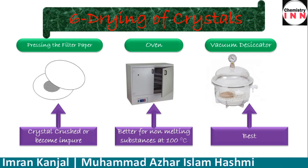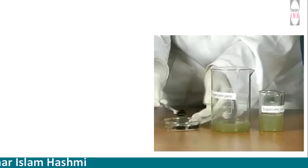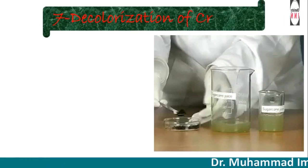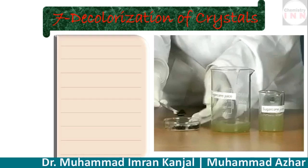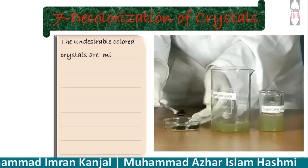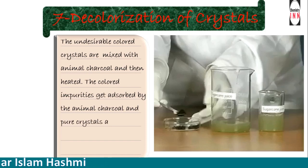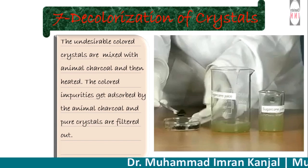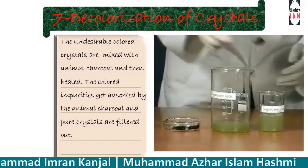In a vacuum desiccator, drying agents such as calcium chloride, phosphorus pentoxide, and silica gel are used to absorb moisture and dry the crystals. Finally, if the obtained crystals are colored due to colored impurities, they are mixed with heated animal charcoal. The colored impurities are absorbed by the animal charcoal, and the pure crystals are then filtered out, as shown in the video.